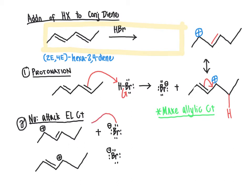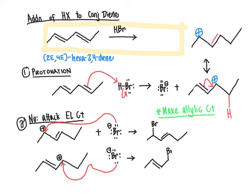The bromine comes in and attacks at each of the two carbocation positions, and we can write out the products of those steps. You'll notice by no coincidence that bromine ends up at the allylic position in each of the two cases, giving us our two major organic products of this reaction.